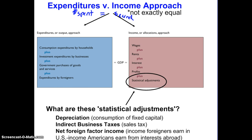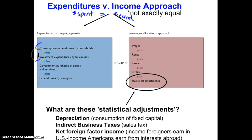But there are a few discrepancies. Looking at the expenditures approach — the one you learned in class — that is consumption plus investment plus government purchases plus net exports, which are exports minus imports. That is the output or expenditures approach.